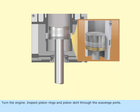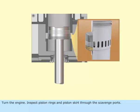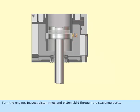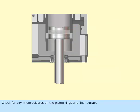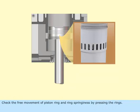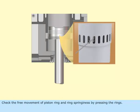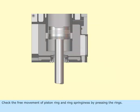Turn the engine. Inspect piston rings and piston skirt through the scavenge ports. Check for any micro-seizures on the piston rings and liner surface. Check the free movement of piston ring and ring springiness by pressing the rings.